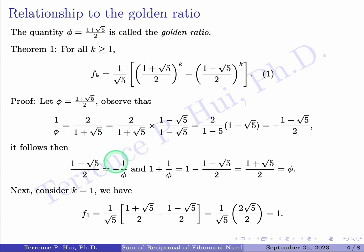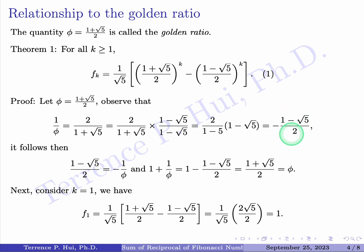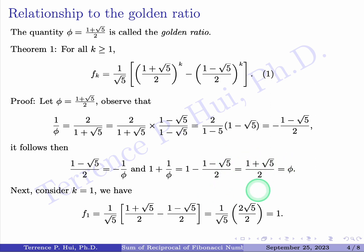Since φ = (1 + √5)/2, taking the reciprocal gives 1/φ = 2/(1 + √5). Multiplying top and bottom by (1 − √5), we get 1/φ = −(1 − √5)/2. Therefore, (1 − √5)/2 = −1/φ. Using this, we compute 1 + 1/φ = 1 − (−1/φ) = (1 + √5)/2 = φ. So we have the key identity: 1 + 1/φ = φ.